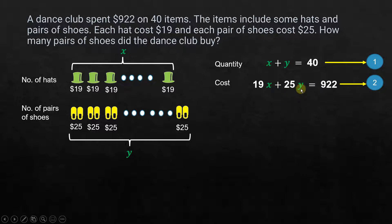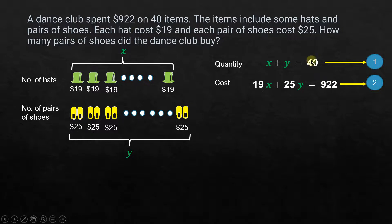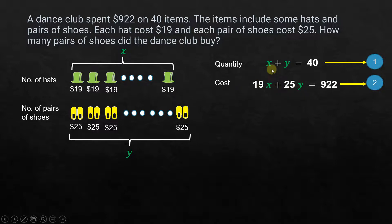We can add or subtract the two equations from each other — if we add both left-hand sides, that equals the sum of the right-hand sides, and the equality is maintained. Since the question asks how many pairs of shoes were bought, we want to find Y. So I want to remove the X terms by eliminating them.